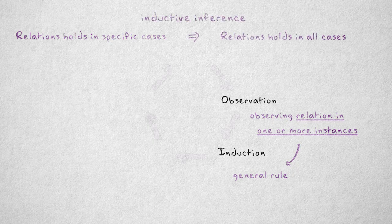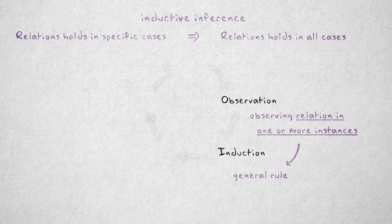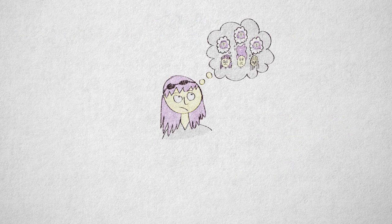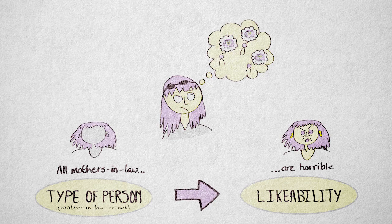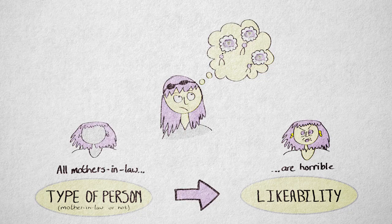For example, from the observation that my friends and I have horrible mothers-in-law, I can induce the general rule that all mothers-in-law are horrible. Of course, this rule or hypothesis is not necessarily true. It could be wrong. That's what the rest of the cycle is about—testing our hypothesis.